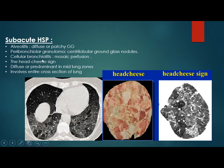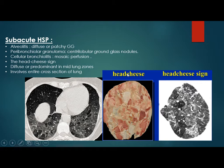In the subacute subtype, this presents later. In the acute, it presents within six hours from exposure. But the subacute presents within four weeks to two or three months from exposure to intermittent low-dose antigen. The histology corresponds well with CT findings: alveolitis manifests as diffuse or patchy ground glass, peribronchial granuloma manifests as centrilobular ground glass nodule, and cellulobular bronchial granulitis causes mosaic perfusion with air trapping.